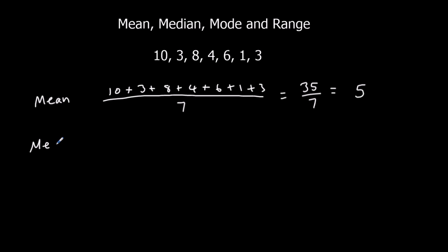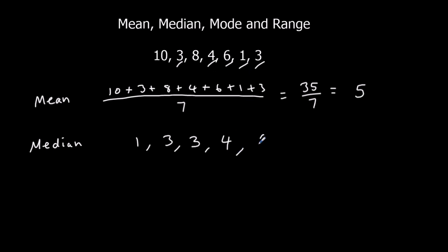The median is the middle number. In order to work out the median, the first thing we've got to do is put the numbers in order from smallest to largest. So: 1, 3, 3, 4, 6, 8, 10. We're going to cross off on both sides — 1 on both sides, 2 on both sides, 3 crossed off on both sides. So the median, the middle number, is 4.